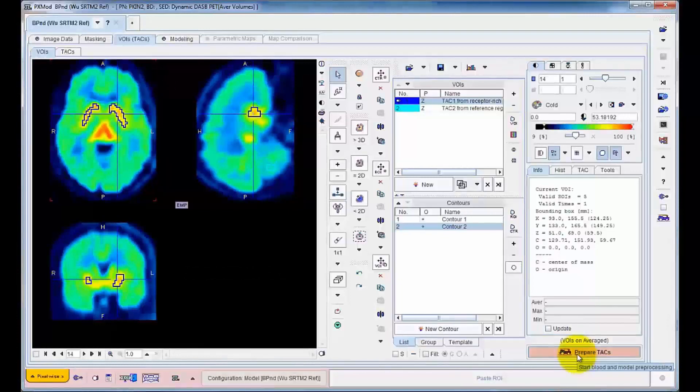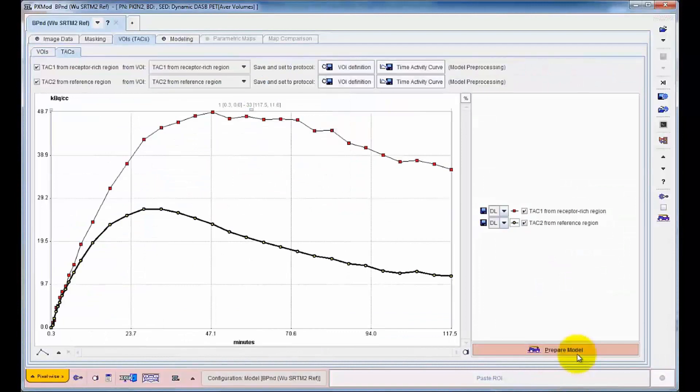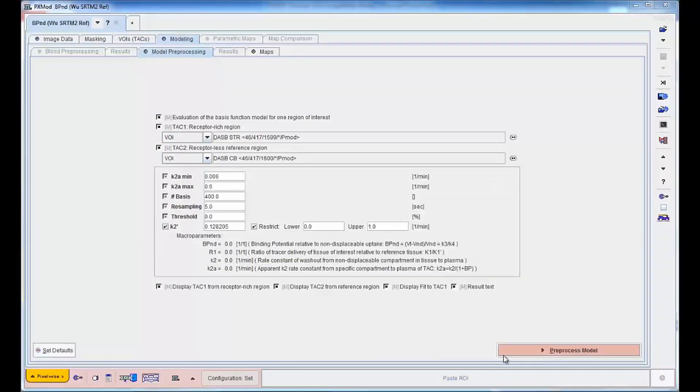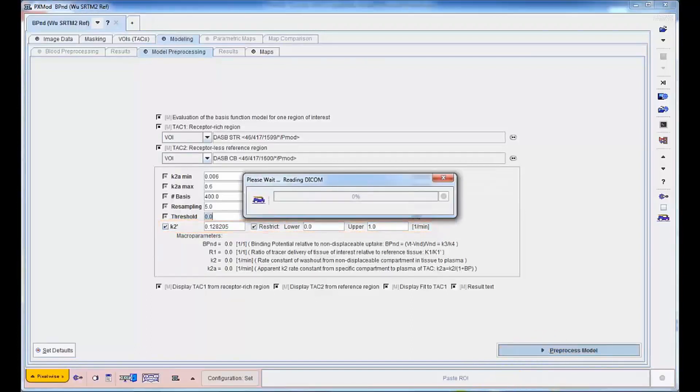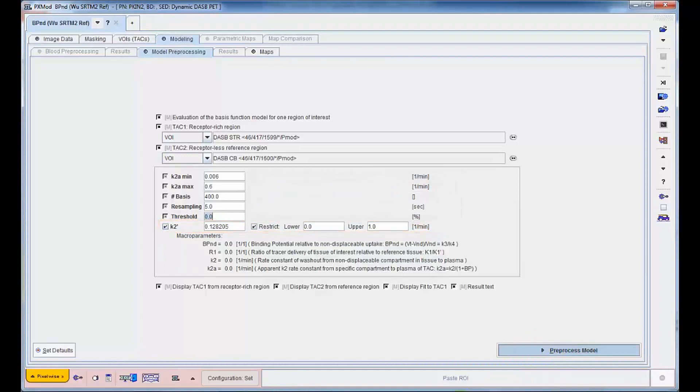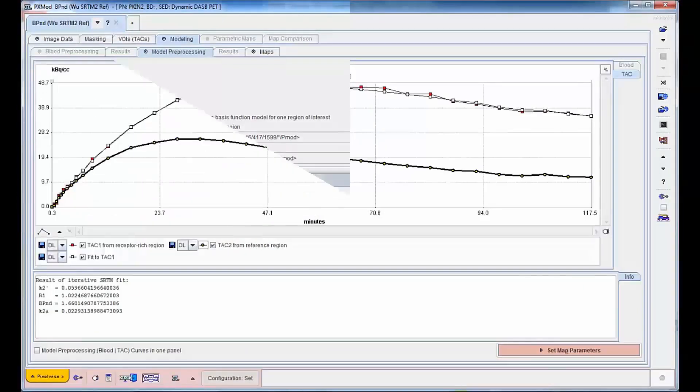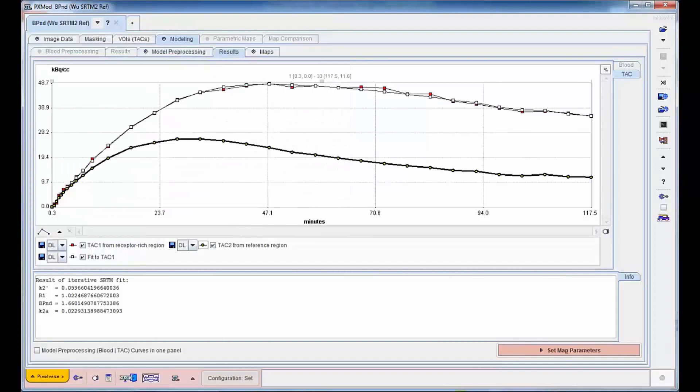They will be used to calculate prior information for the pixelwise calculation. In our example, K2'. The calculation of this prior information is configured, followed by curve fitting and inspection of the result. In the event of a good fit outcome, the calculated priors can be applied for the parametric mapping.